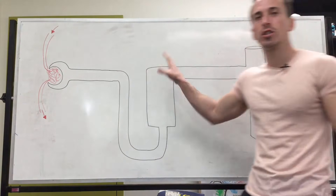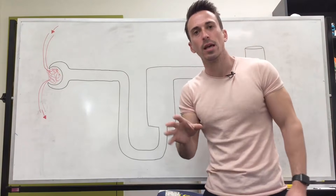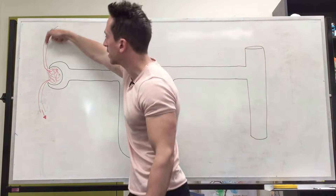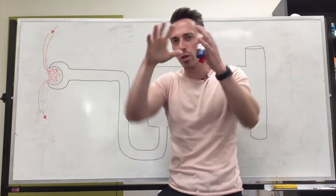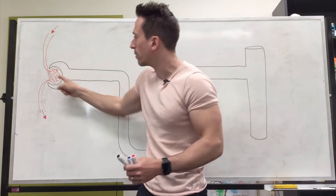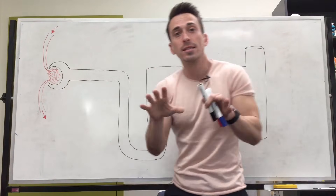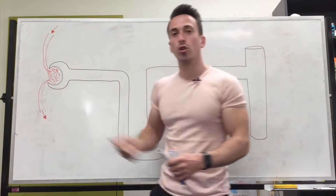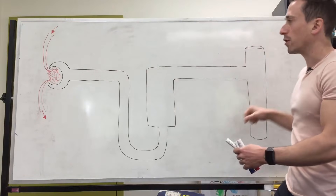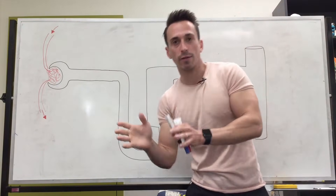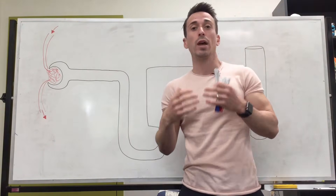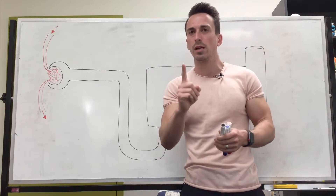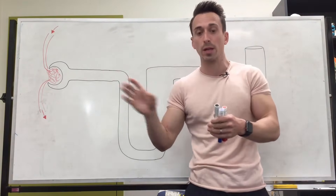The nephron is the filtration subunit within all of our kidneys. The blood comes in through something called the afferent arteriole, turning into what looks like a ball of yarn — a capillary bed called the glomerulus — and this is where we filter the blood into these tubes called a nephron. Each kidney has a million nephrons, which means we have two million nephrons in total, and we only effectively need one million to do this process properly.